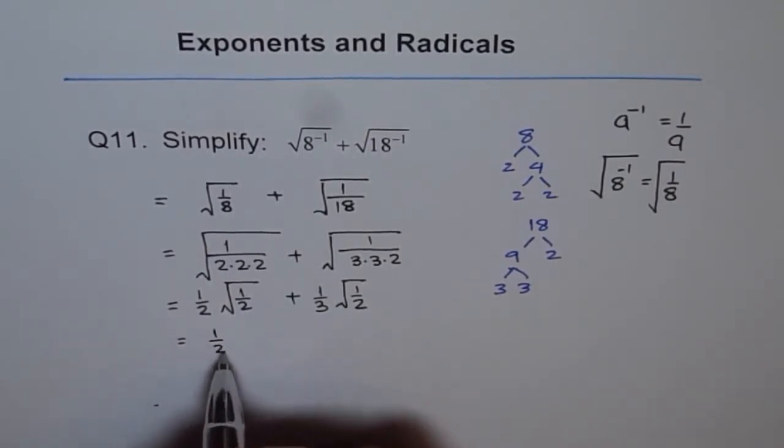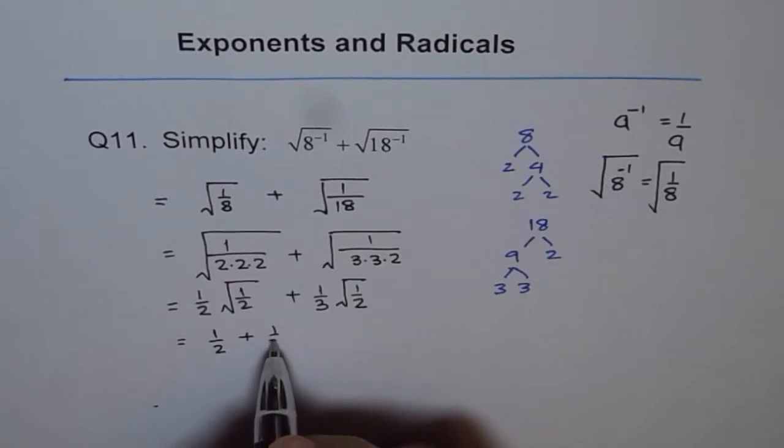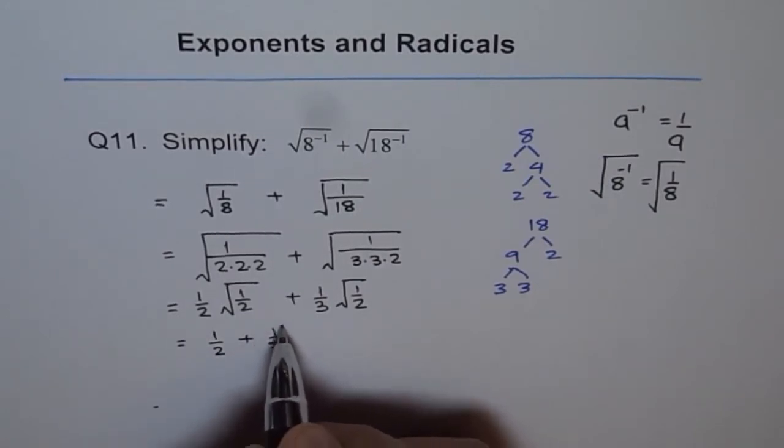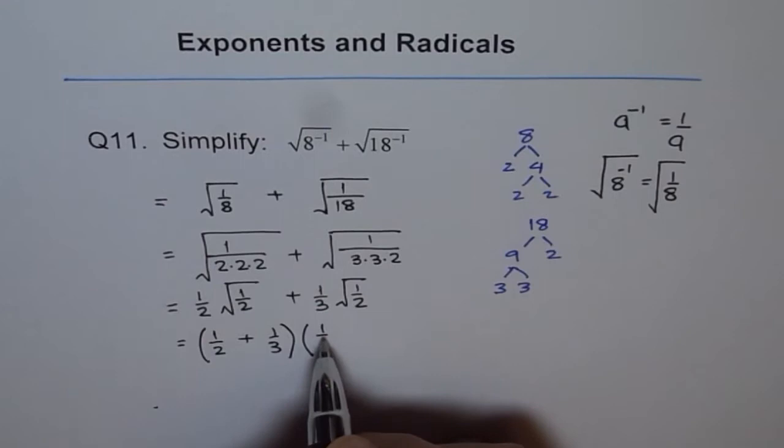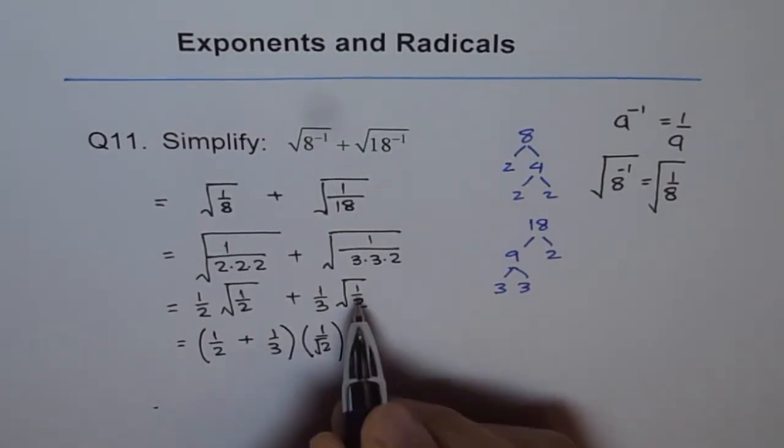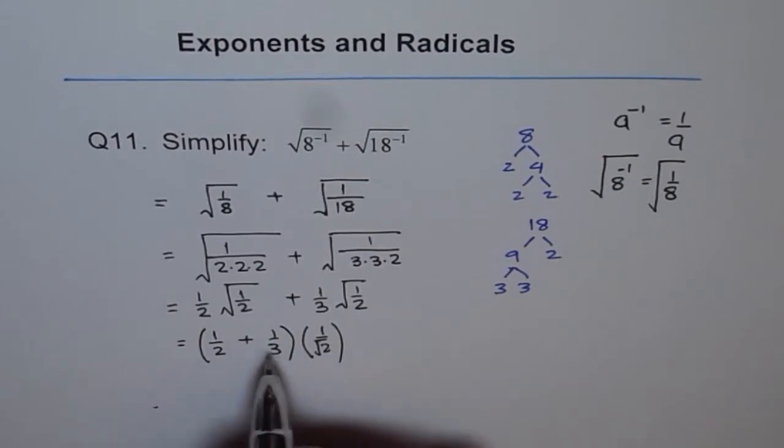And then we can write down our answer. So it is half plus 1 over 3. And this is 1 over square root of 2 or we can write like this also. The square root of 1 is 1. So we can add these 2.